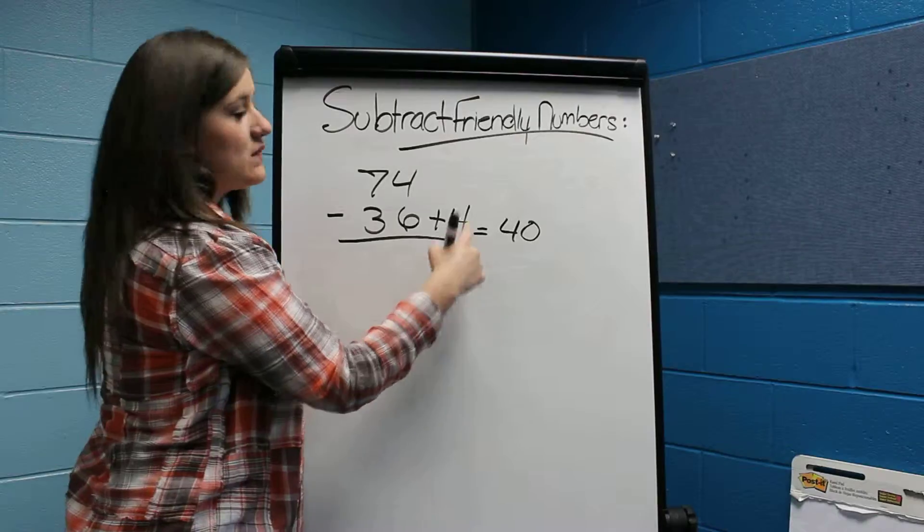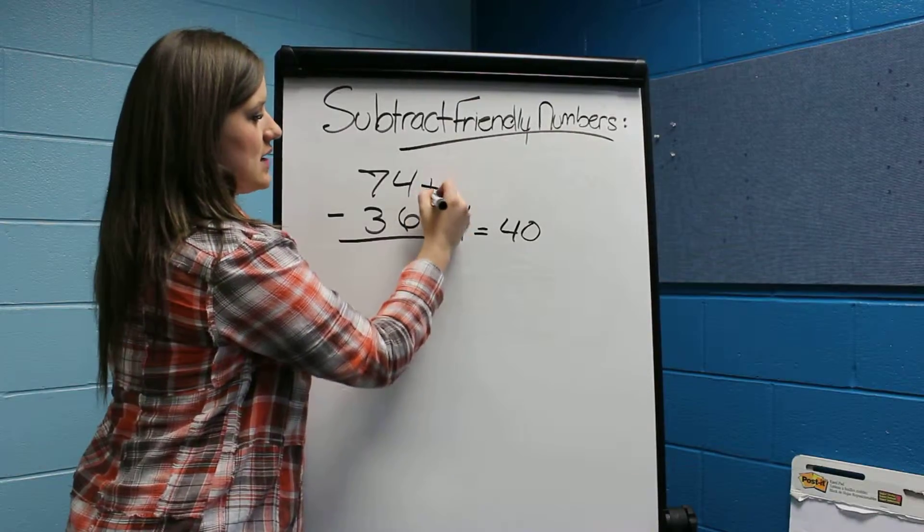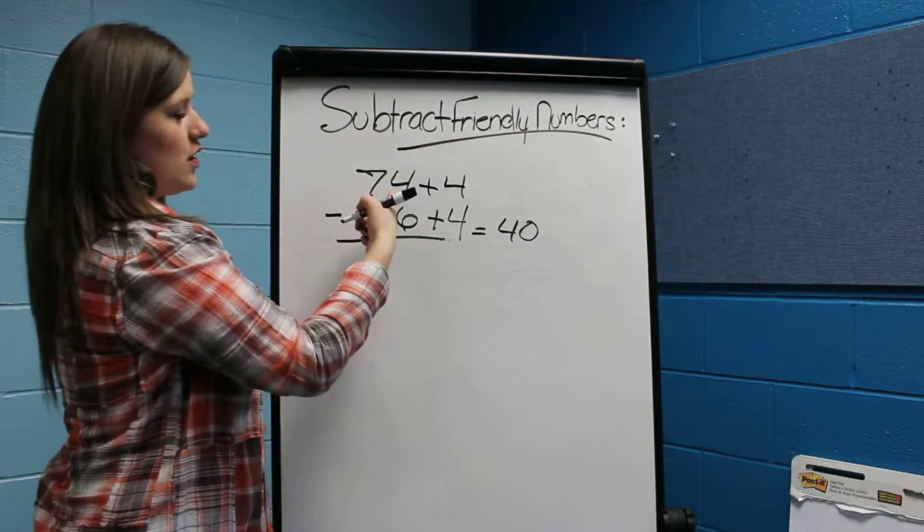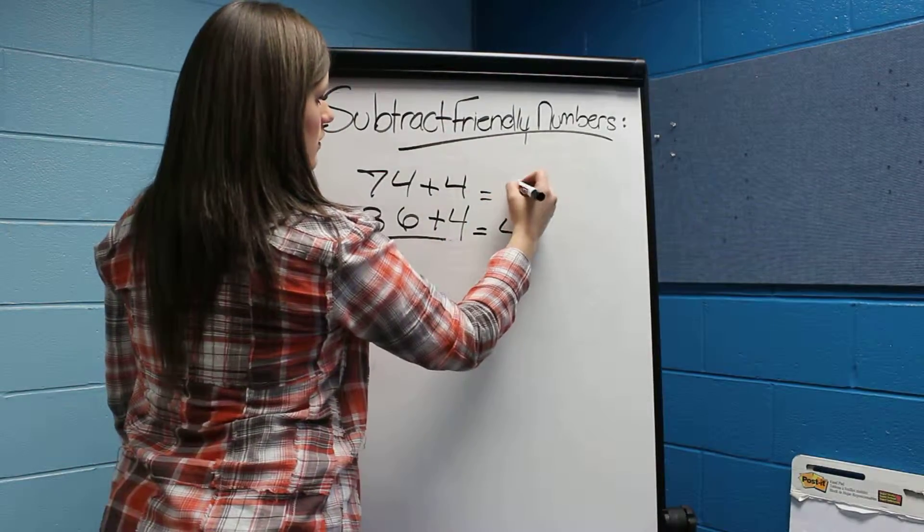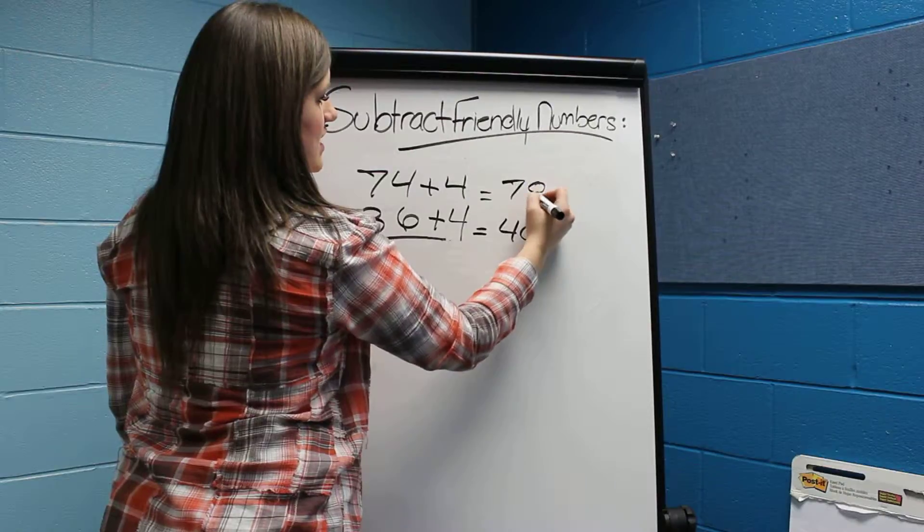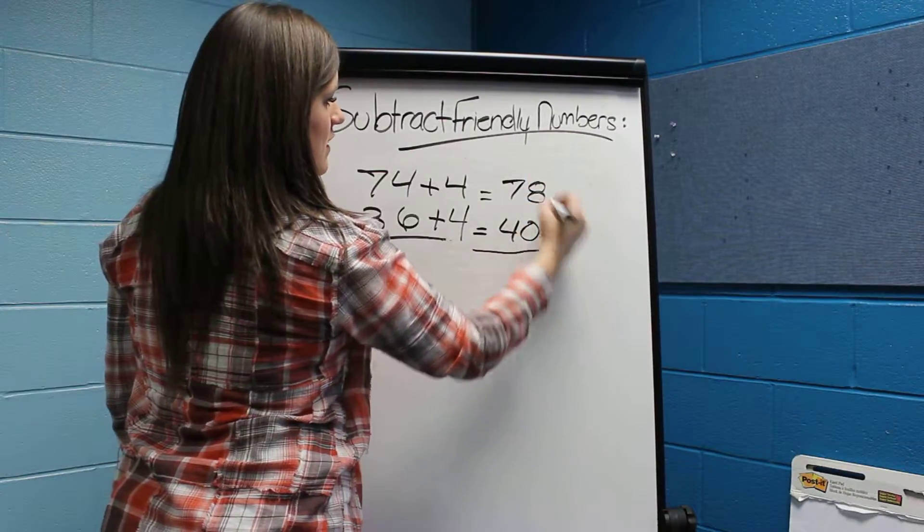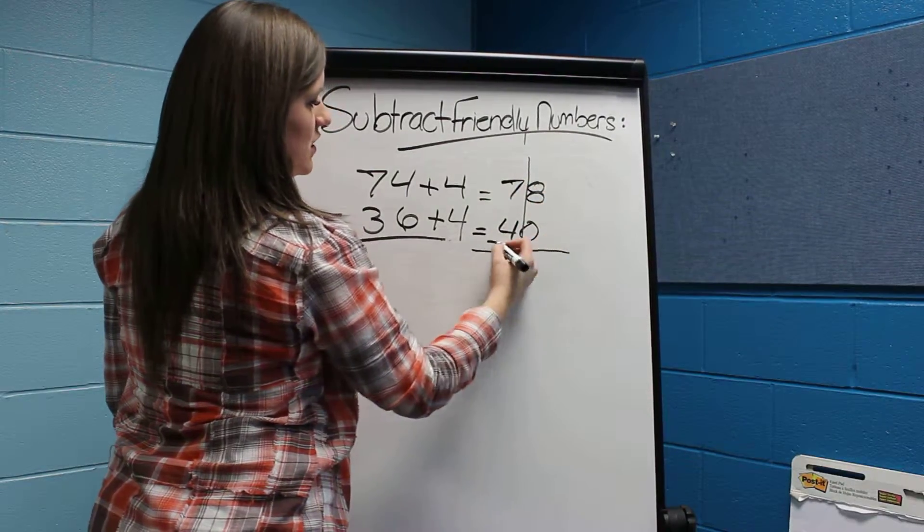I have 74 plus 4 which equals 78. Now I'm just going to draw a box down here because we're subtracting these.